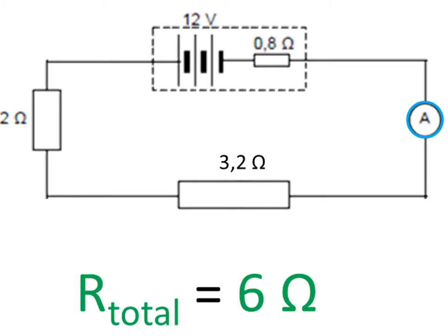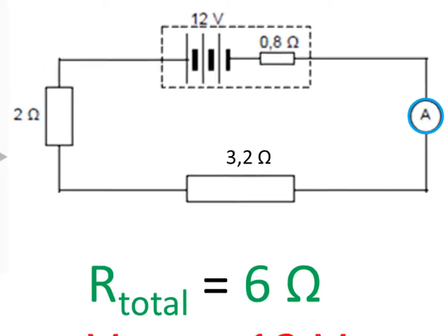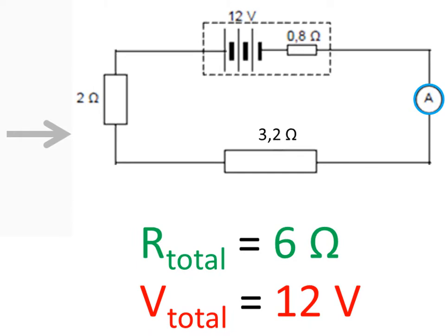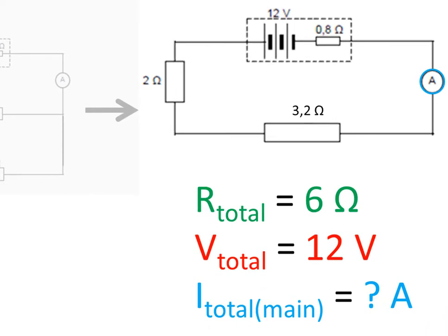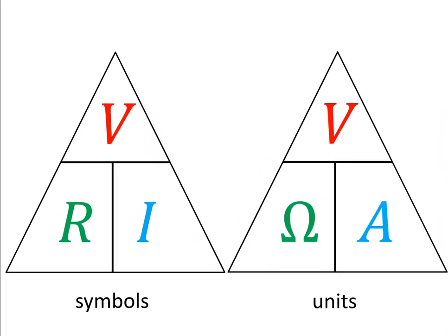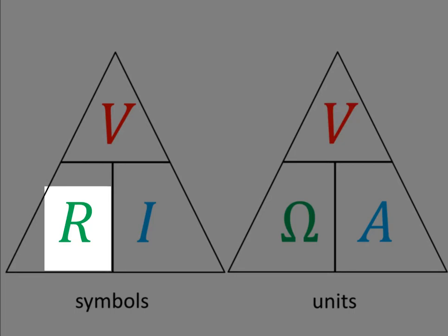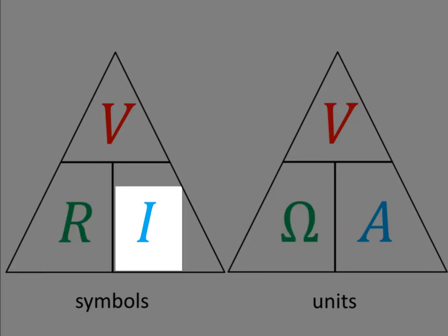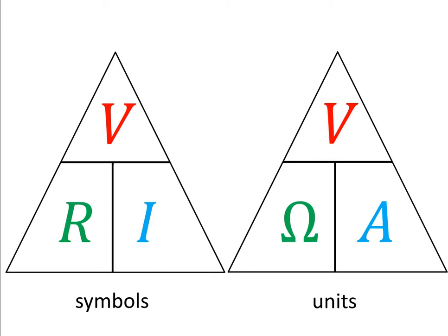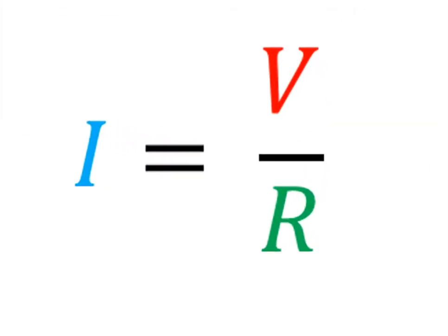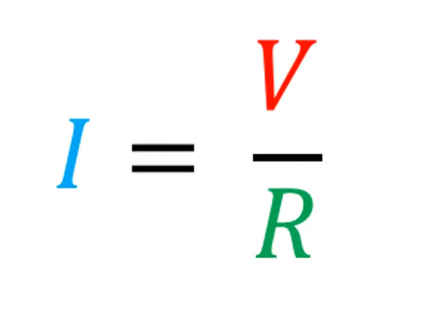We know that the total circuit resistance is 6 ohms and the supply voltage, which could also be called V total, is 12 volts. We need to find I main. We know the relationship between potential difference (also called voltage, measured in volts), resistance (measured in ohms), and current strength (measured in amperes). From this triangle, we know that I equals V over R — current strength equals potential difference divided by resistance.